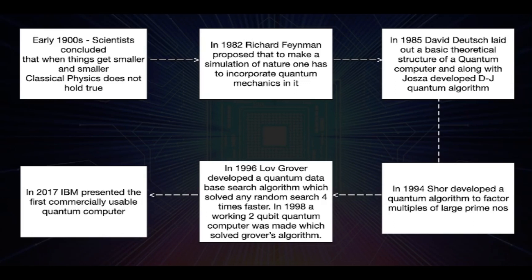But the actual hardware is not yet capable of such big calculations, and we need thousands of qubits and stable machines to perform this algorithm. In 1996, Grover developed a quantum database search algorithm, and in 1998, a working two-qubit quantum computer could solve this algorithm. Twenty years later, IBM presented the first commercially available quantum computer.